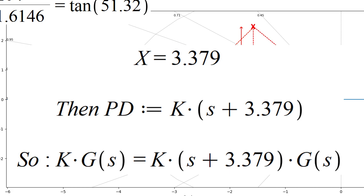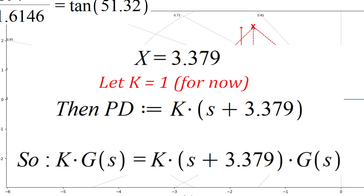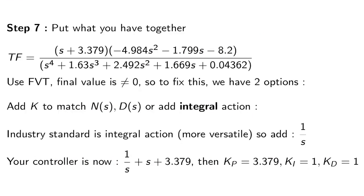So s equals negative 3.379 corresponds to a zero, meaning the factor is (s plus 3.379). We have now designed our PD controller. Looking at the PID formula — KP plus KD·s plus KI/s — KP equals 3.379 and KD equals 1 (assuming K equals 1 for now). With that zero location, you combine (s plus 3.379) multiplied by the plant transfer function.